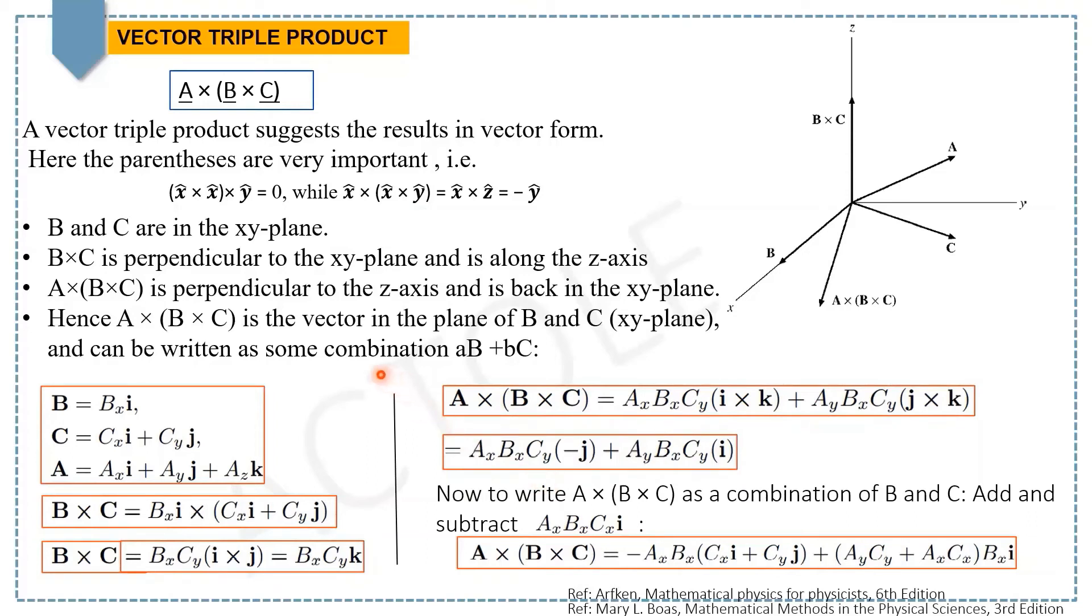We want to find A × (B × C) as a combination of B and C, so let's add and subtract terms. By adding and subtracting this expression, we get A × (B × C) equal to this.